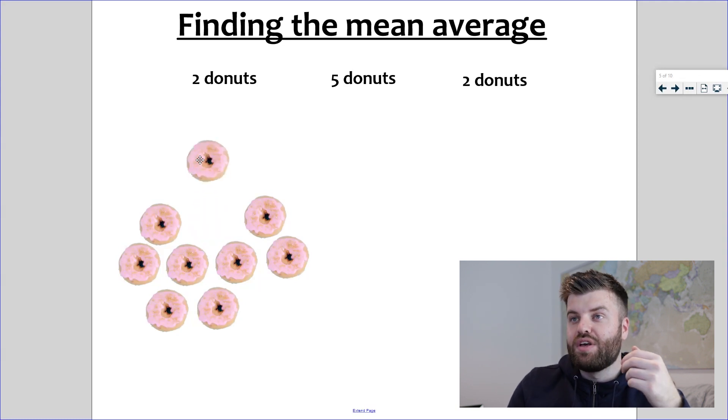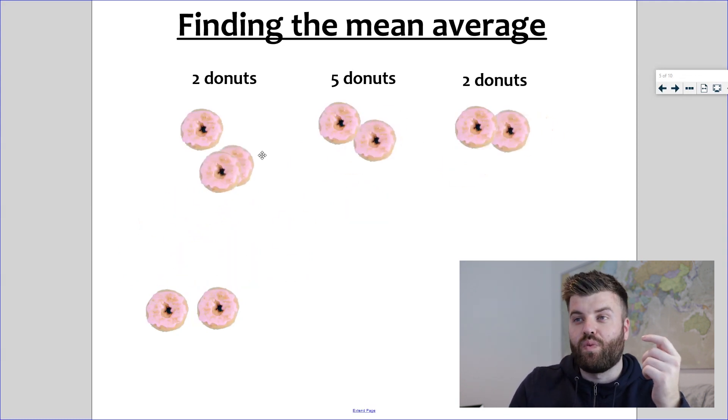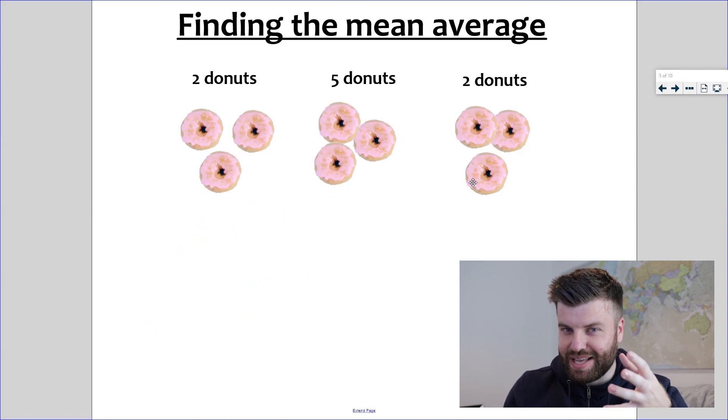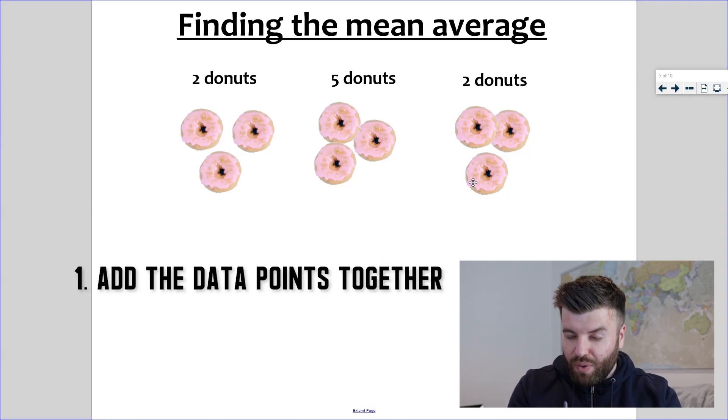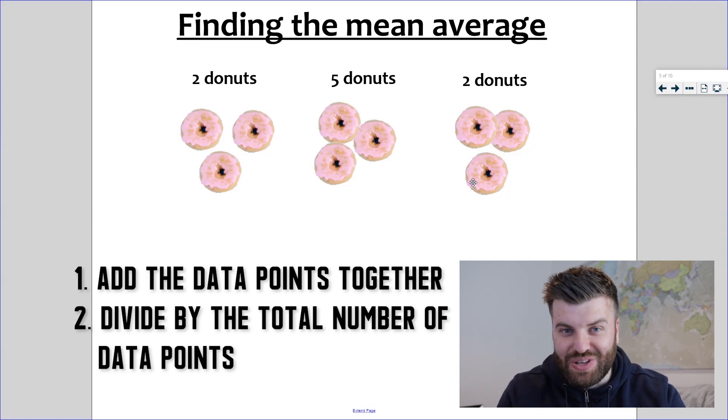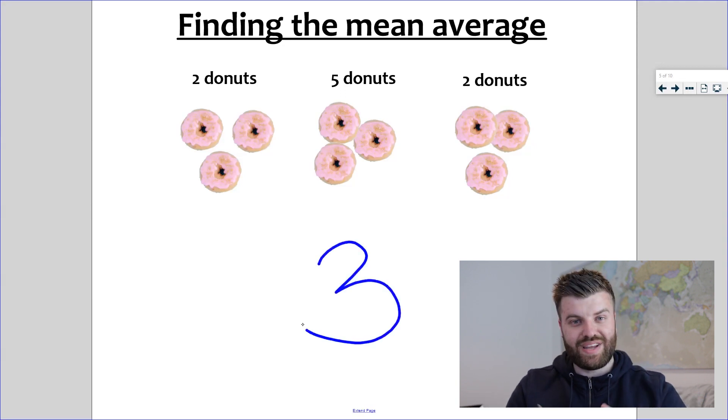I'm going to prove it to you now by sharing them back out: one, two, three, one, two, three, one, two, three. So on average a person had three donuts. Now no one actually had three donuts in the first place, so averages aren't always the most accurate way of saying what people have, but they give you a really good middle ground, a really good rough idea. So to go over those steps again: add up all of the numbers, and then divide by the total number of numbers you had to start off with. In this case, two plus five plus two is nine divided by three is three. The mean average for this set of data is three.